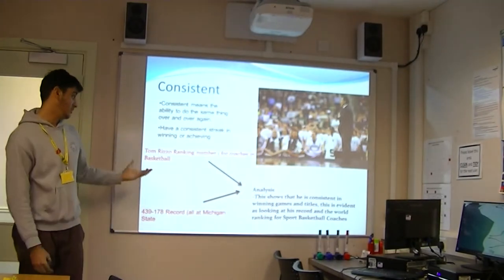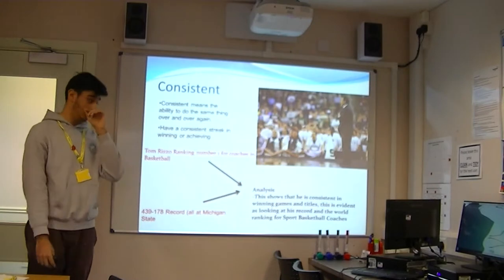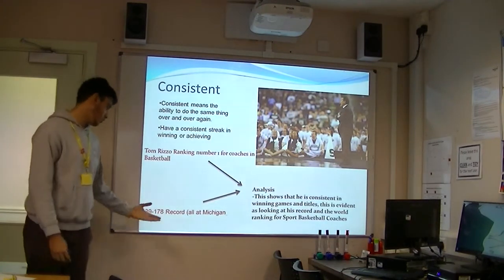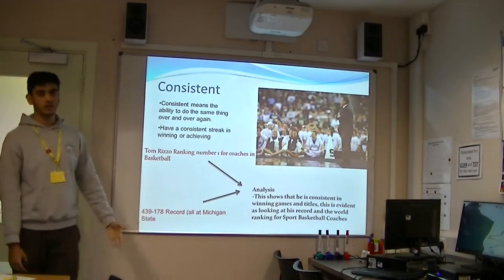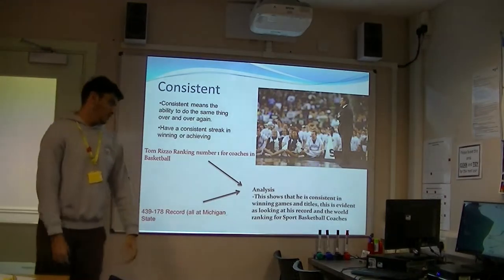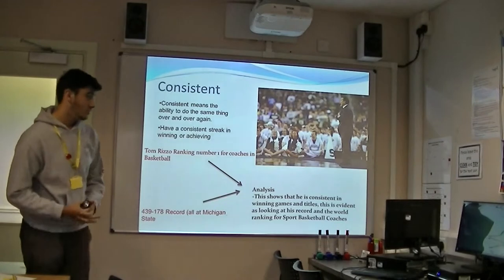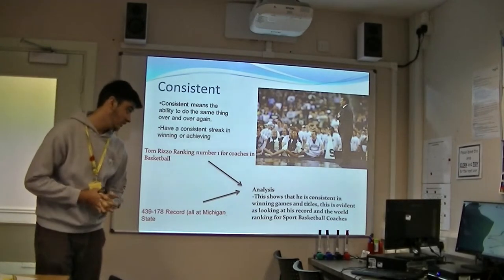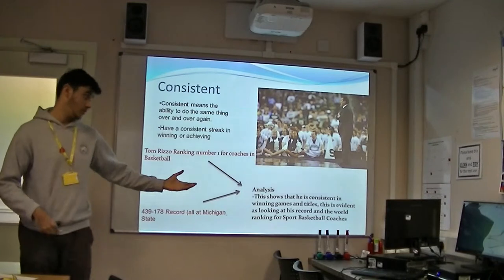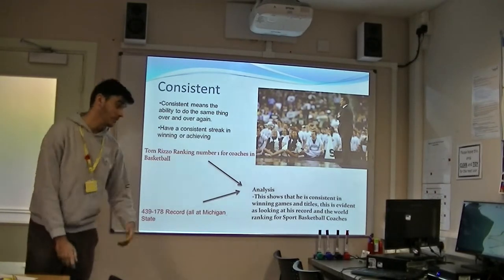A good example is in basketball — Tom Izzo, ranking number one for coaches in basketball. As you can see from the record, it shows 439 wins out of 178 losses. This shows that he is consistently winning games for his team and, looking at his record, he is world ranking number one in sport basketball coaches.